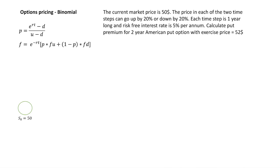The current market price is $50, so we create one node. The price can go up by 20% in the first time step, so S0U = 50 + 20% of 50 = $60. U = 60/50 = 1.2. It can also go down by 20%, so S0D = 50 − 20% of 50 = $40. D = 40/50 = 0.8.